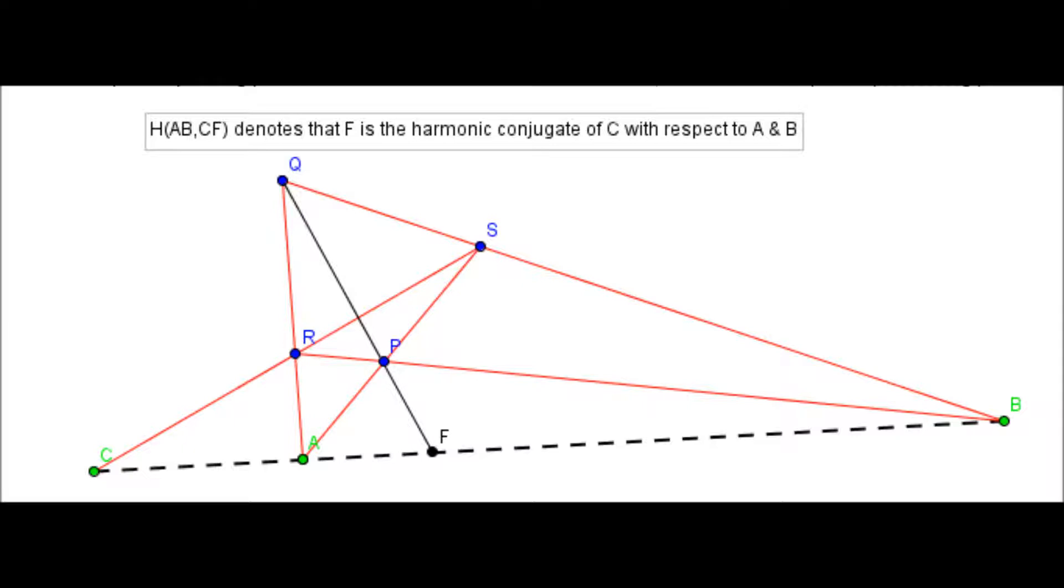And we usually denote this by saying that, well, we write H(A,B,C,F). In words, that means that F is the harmonic conjugate of C with respect to the pair A and B. And we've used this sort of notation involving P, Q, R and S, just to be consistent with previous lectures.